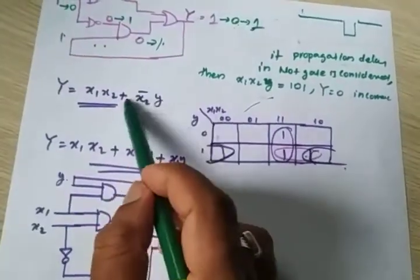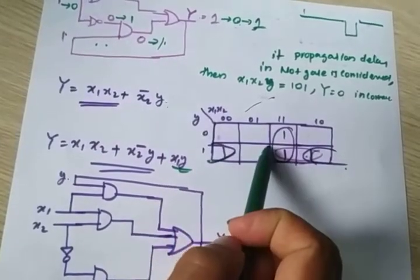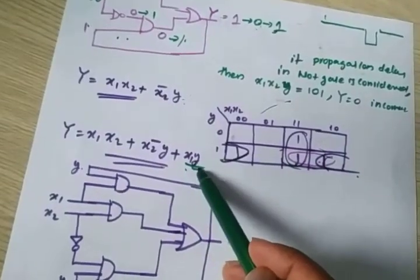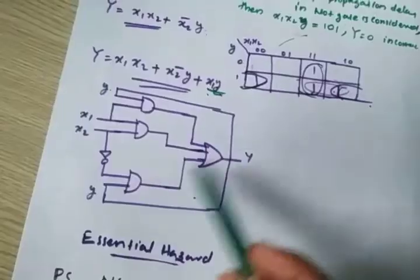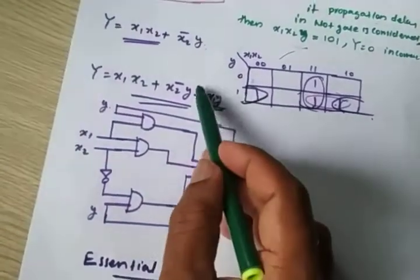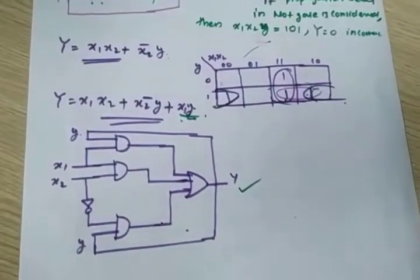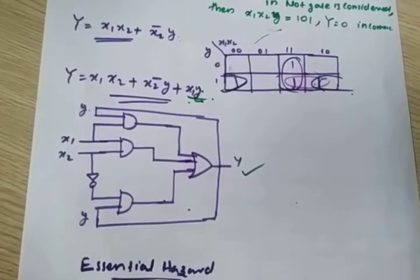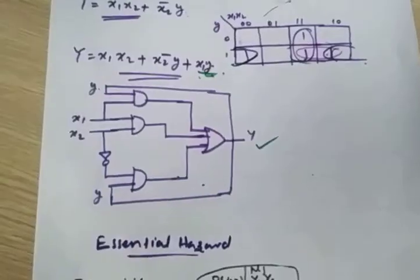So the original equation has a hazard. By mapping into K-map and applying the redundant group concept, we get an additional term x1·y. The hazard-free equation becomes Y = x1·x2 plus x2bar·y plus x1·y. Drawing this circuit gives the hazard-free circuit of the sequential network.